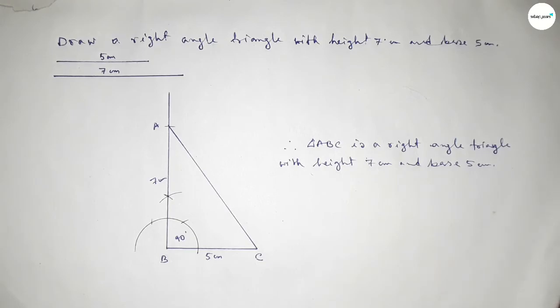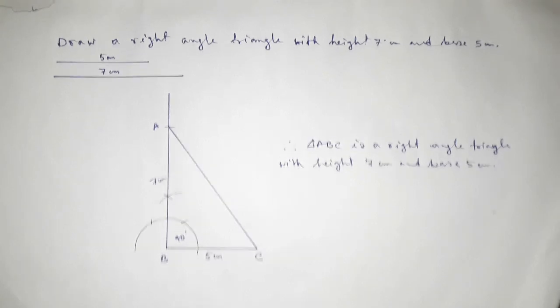That's the process to construct a right angle triangle with height equal to 7 centimeter and base equal to 5 centimeter. That's all — thanks for watching. If this video is helpful to you, please share it with your friends.